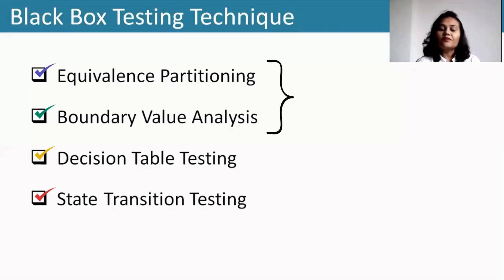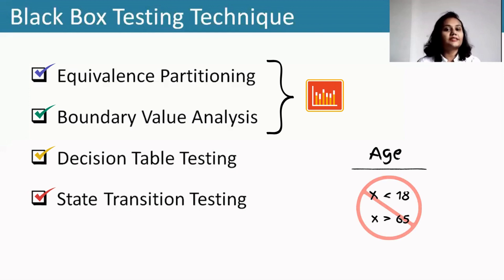Equivalence and boundary value techniques are used for analyzing the behavior in terms of ranges. Suppose there is a range given that in the age text box, a user less than 18 years and a user greater than 65 years will not be accepted.